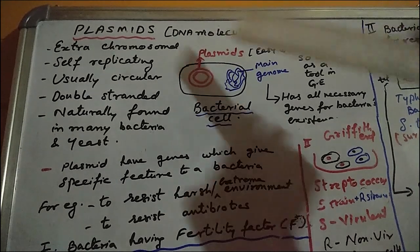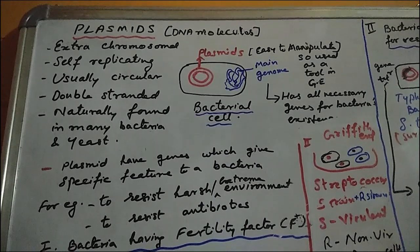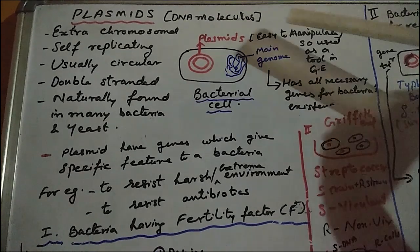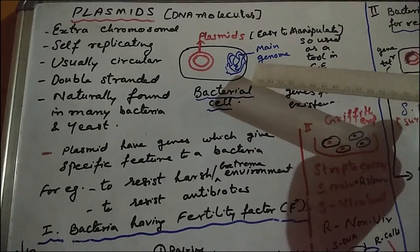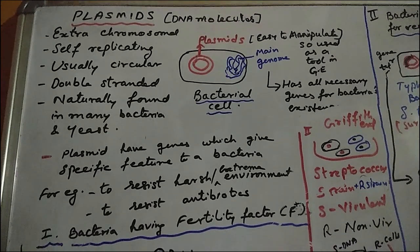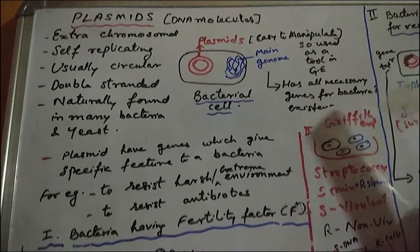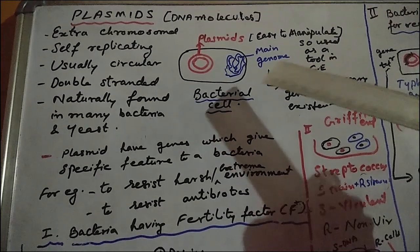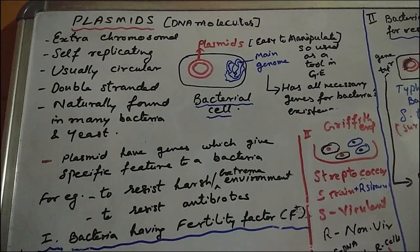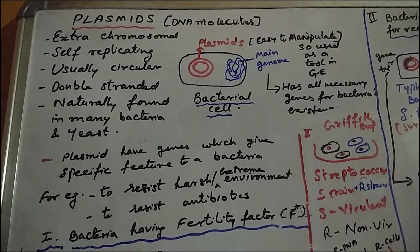So what are plasmids? They are nothing but DNA molecules. They are used so much in biotechnology because they are DNA molecules, but they are not the main DNA in the main genome of an organism. Plasmids are found in many bacteria and yeast, but other than the main genome which gives all necessary features for the bacteria to exist, there is something extra — extra genetic material in a bacterial cell.